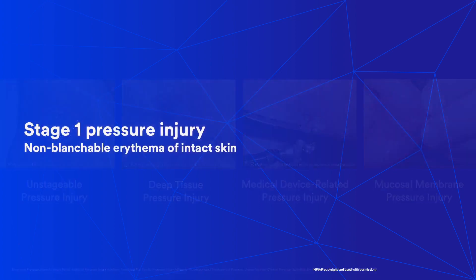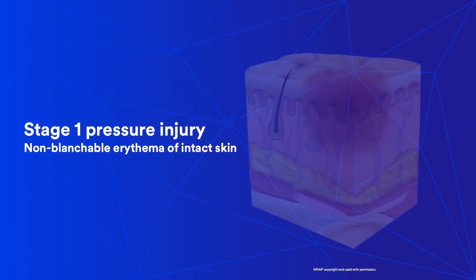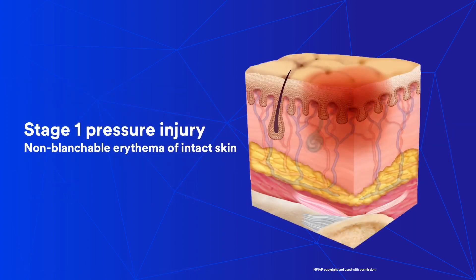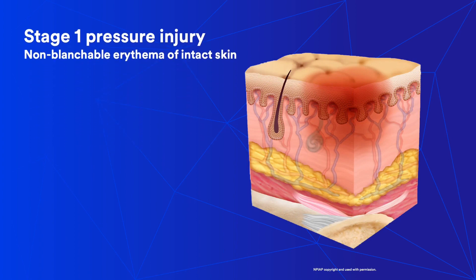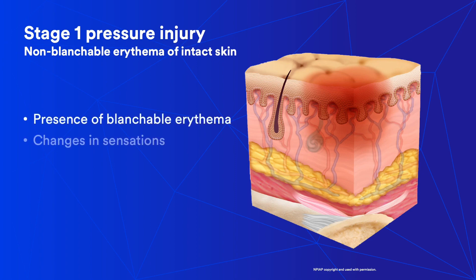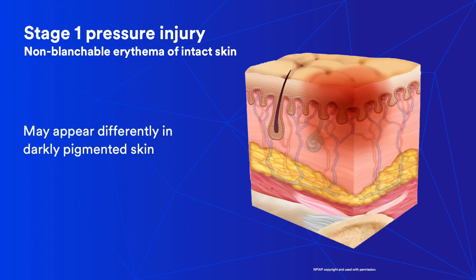A cross-section illustration of tissue shows a red spot on and below the skin. A stage 1 pressure injury can be described as intact skin with a localized area of non-blanchable erythema. Visual changes may be preceded by a presence of blanchable erythema, or changes in sensations, temperature, or firmness. Color changes do not include purple or maroon discoloration, as those may indicate a deep tissue injury.